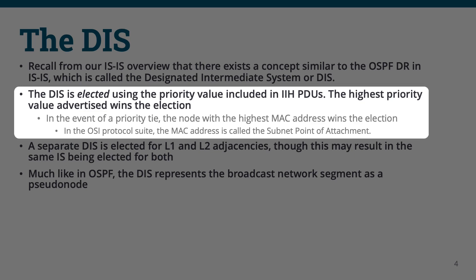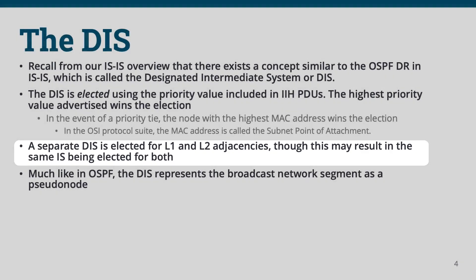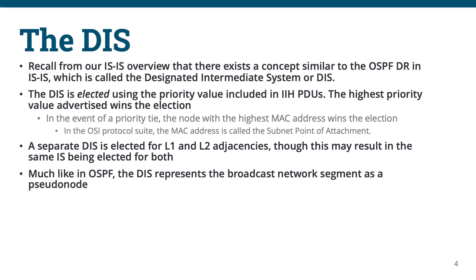Unlike OSPF, however, ISIS has a level concept for hierarchical topologies, and an interface can form potentially both Level 1 and Level 2 adjacencies. Separate DIS may be elected for Level 1 and Level 2 adjacencies over the same broadcast segment. This may or may not result in the same intermediate system being elected as the DIS for both Level 2 adjacencies.